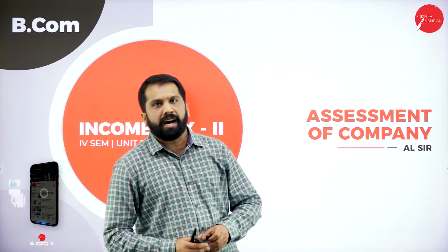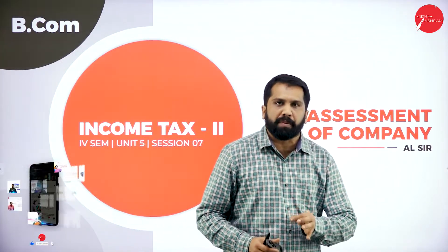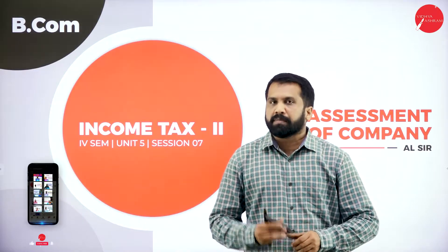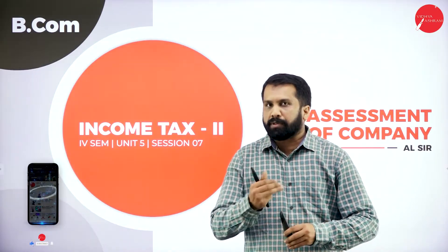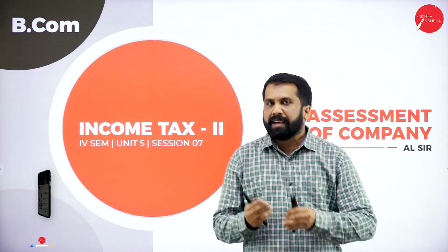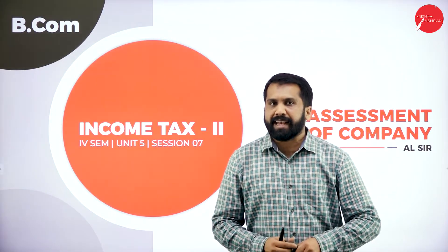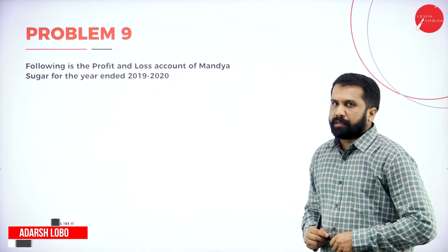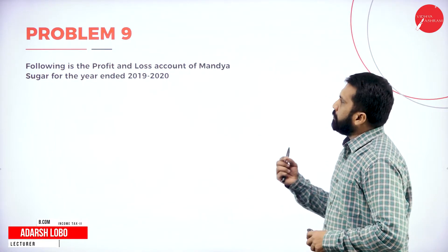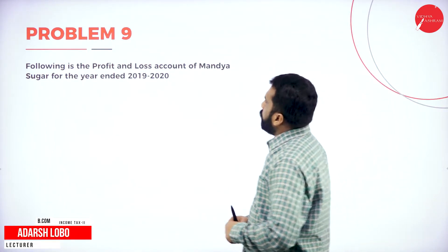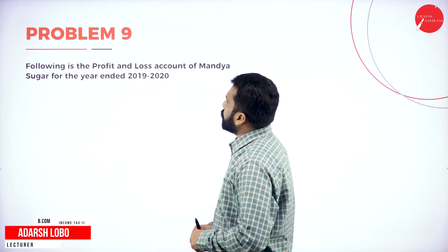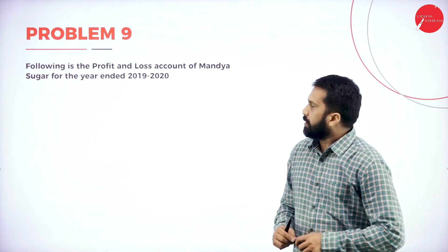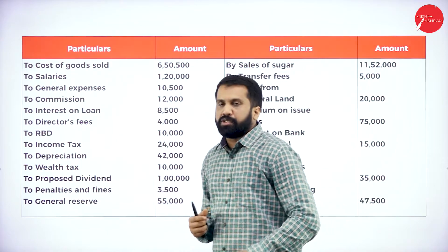We are doing the last problem on this particular topic and this will be your examination problem. We will work out the problem together, so you are supposed to keep a book, pen as well as calculator. Problem number 9: from the profit and loss account of Mundia Sugar for the year ended 2019 and 2020.